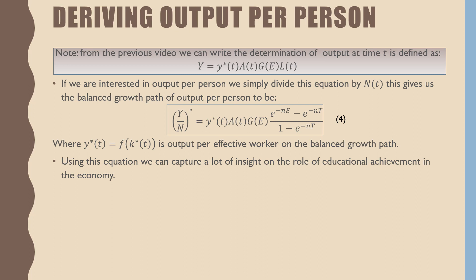Where Y over N is equal to output per effective labor times A(t) times G(E) times e raised to the power of negative n capital E minus e raised to the power of negative n to the time capital T all over 1 minus e raised to the power of negative n capital T.